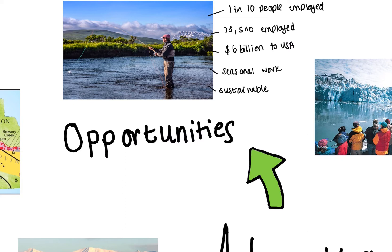If something's sustainable, it means you can meet the needs of today — which you can, because you can fish today — but also you can meet the needs of future generations, because it's allowing the fish population to repopulate. So fishing, on the whole, is pretty good for people, the economy, and the environment.